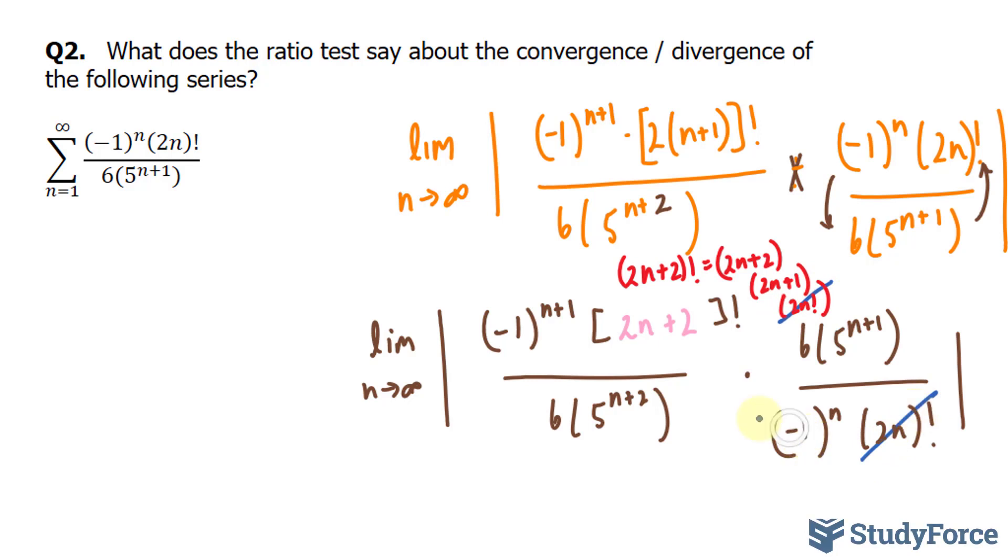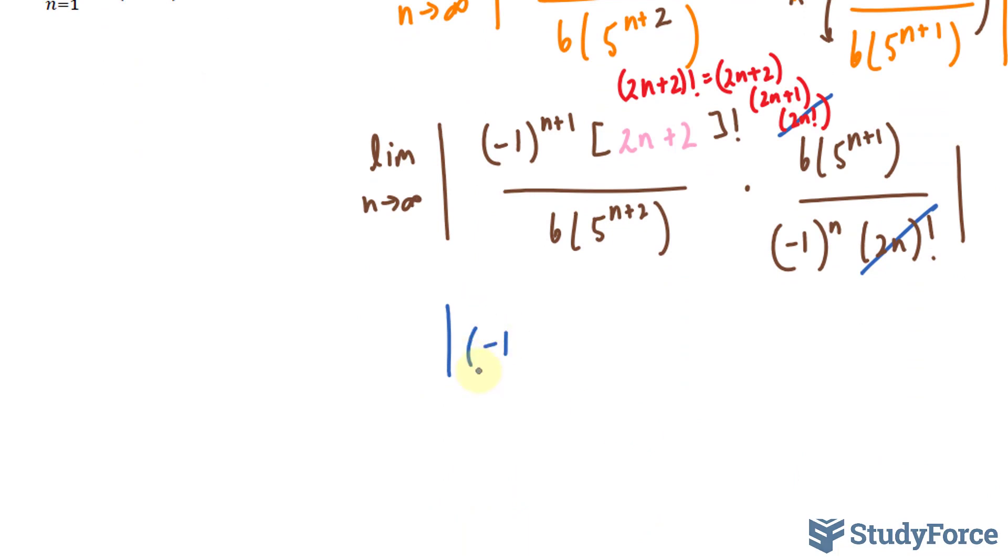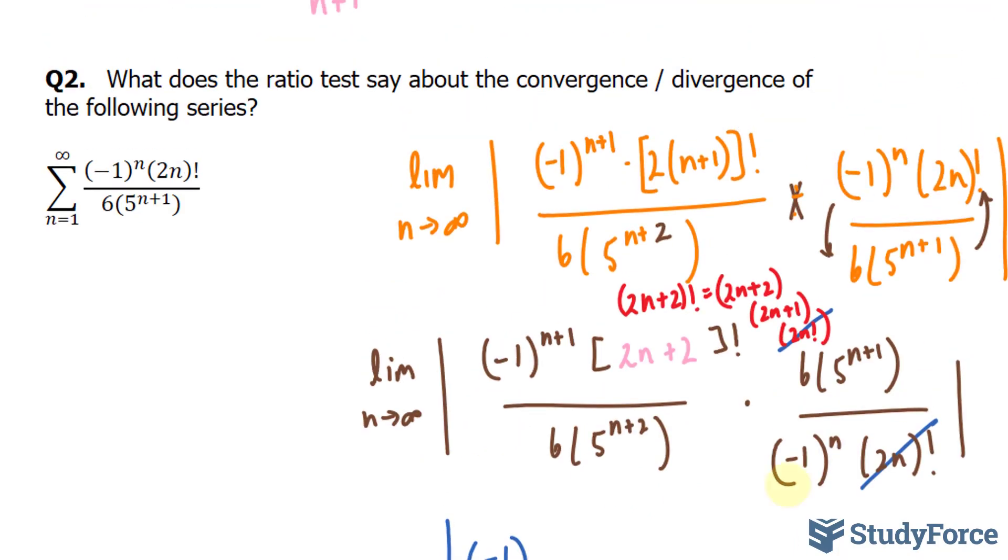And now if we look at these two, we have the same base of negative 1, therefore we can subtract the exponents by the exponent laws. If I subtract this from this, I'll end up with negative 1 to the power of 1. So I'll write that underneath, negative 1, we can stop worrying about that.